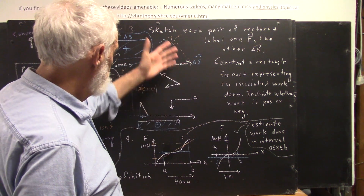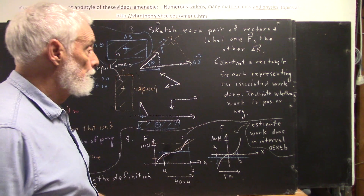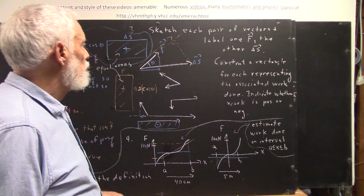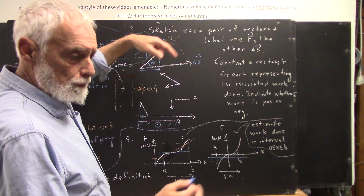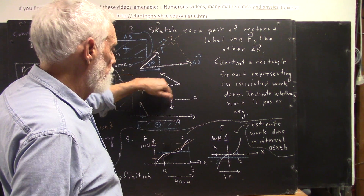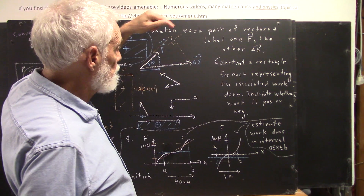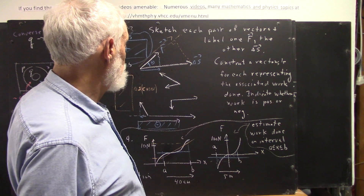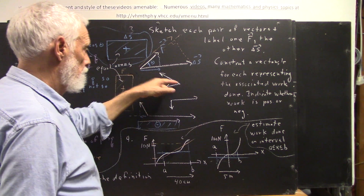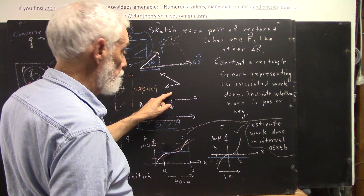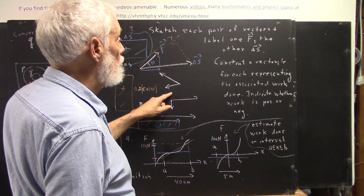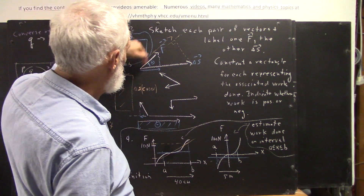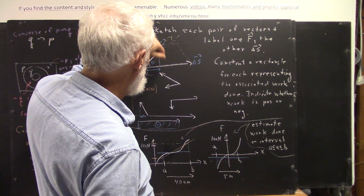We have a series of pictures of pairs of vectors and we asked people to copy down and sketch these pairs. For each pair, label one of them F and the other delta S. For example, we could take this pair and label this one F and this one delta S, or vice versa. Here I labeled this vector F and this vector delta S.